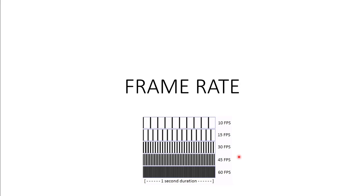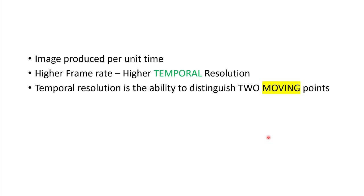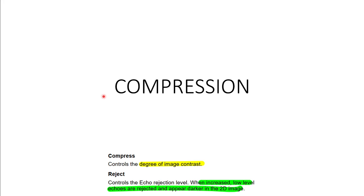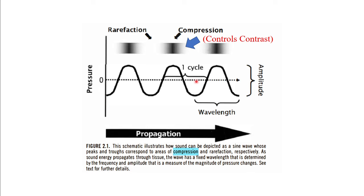Frame rate is the number of frames per second — for example, 60 fps means 60 frames per second. More frames per second means better temporal resolution. Temporal resolution is the ability to resolve moving points in time.